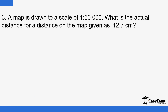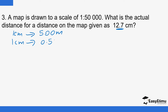Example: A map is drawn to a scale where one centimeter on the map represents 50,000 centimeters on the actual ground. What is the actual distance for a map distance of 12.7 centimeters? First, convert the scale: 50,000 centimeters divided by 100 equals 500 meters, and dividing by 1,000 gives 0.5 kilometers. So one centimeter on the map represents 0.5 kilometers on the actual ground.